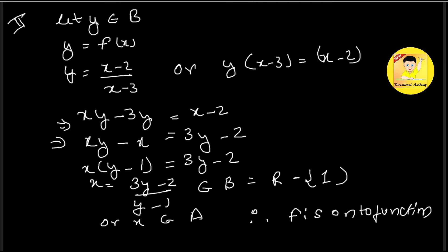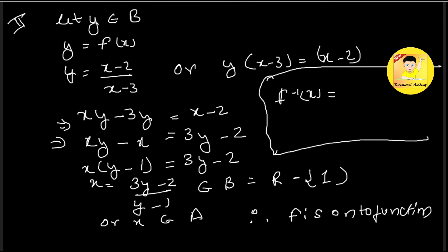So this is our one-to-one and onto proof complete. Now for the second part, we find the inverse. Since f is one-to-one and onto, therefore f is invertible. For f inverse of x, we replace y with x in the equation x = (3y-2)/(y-1), so f inverse(x) = (3x-2)/(x-1), which is the required answer.